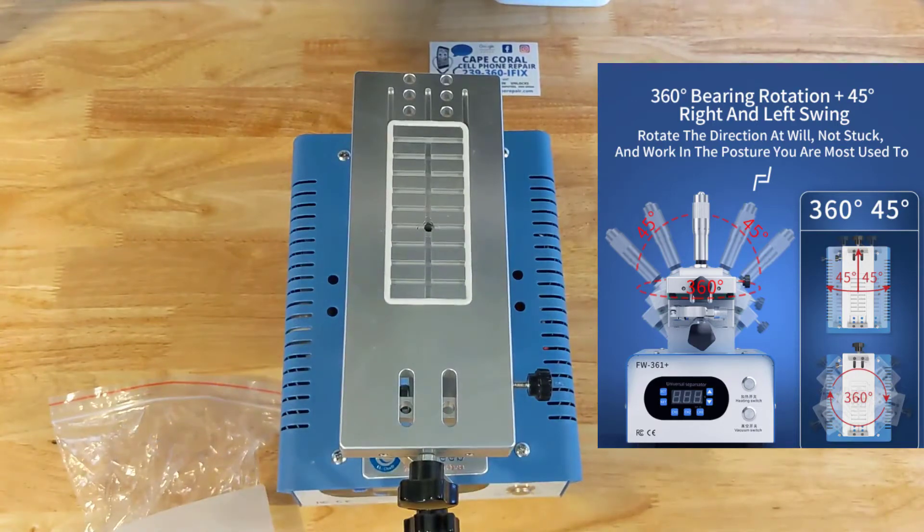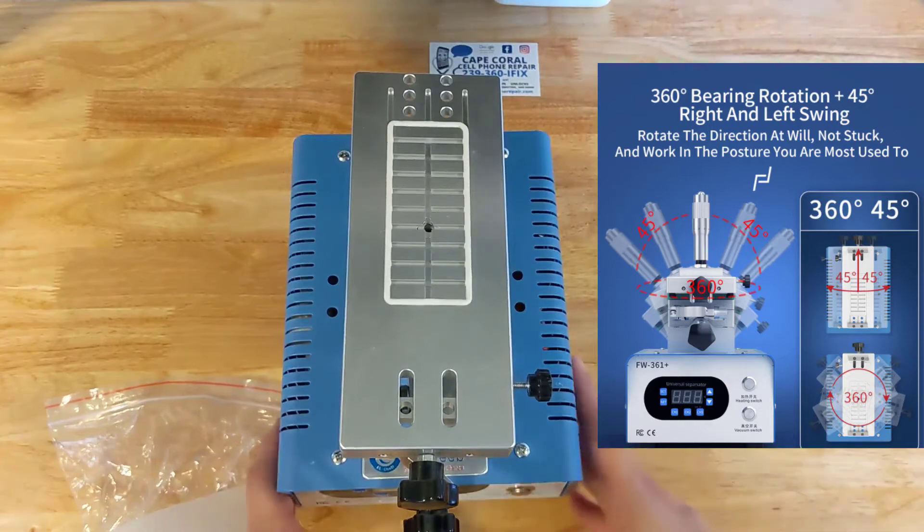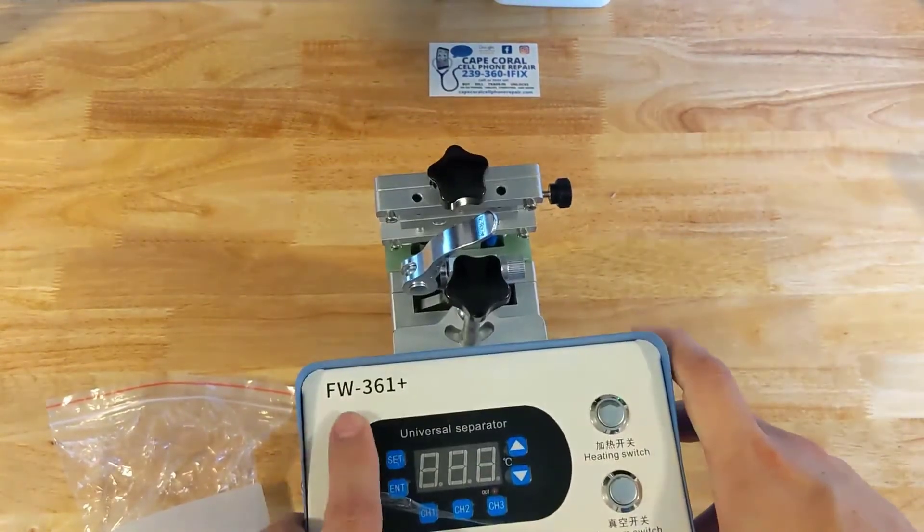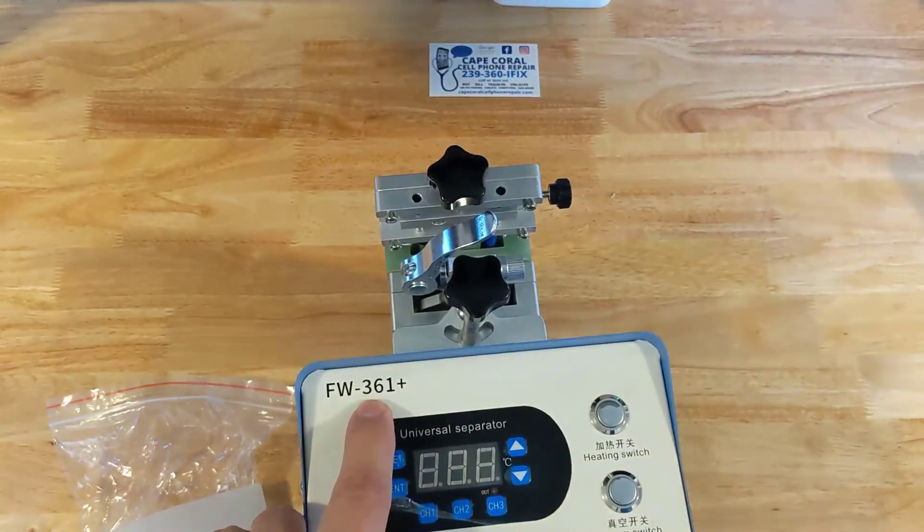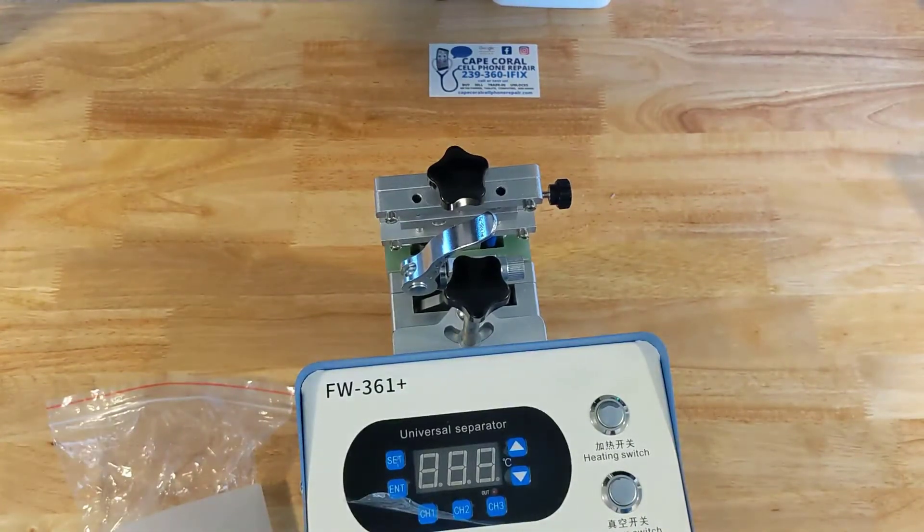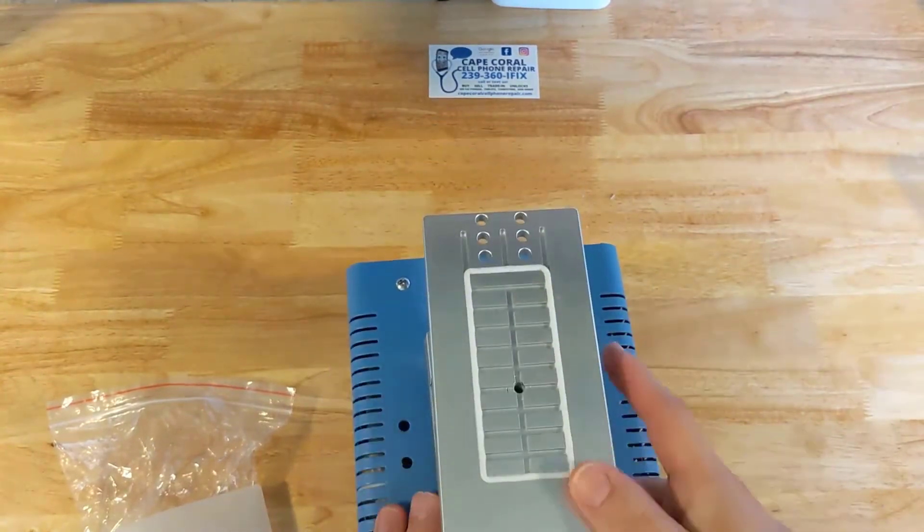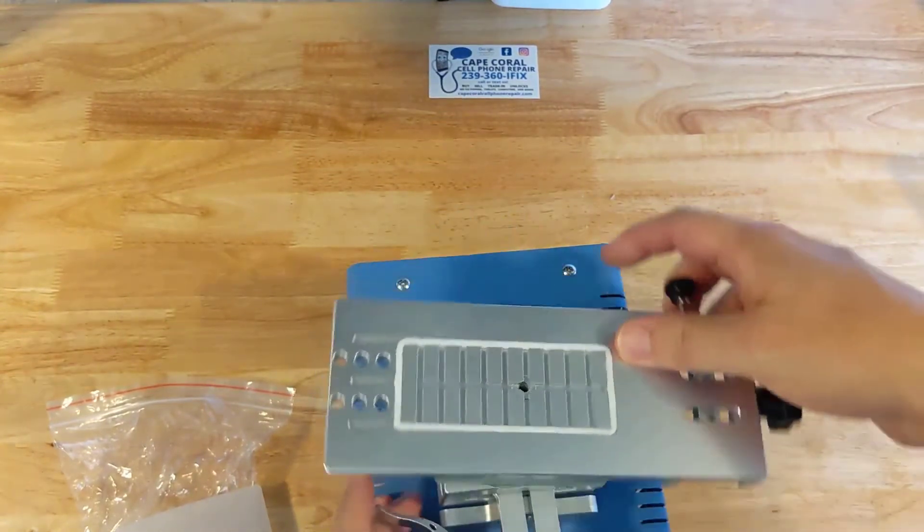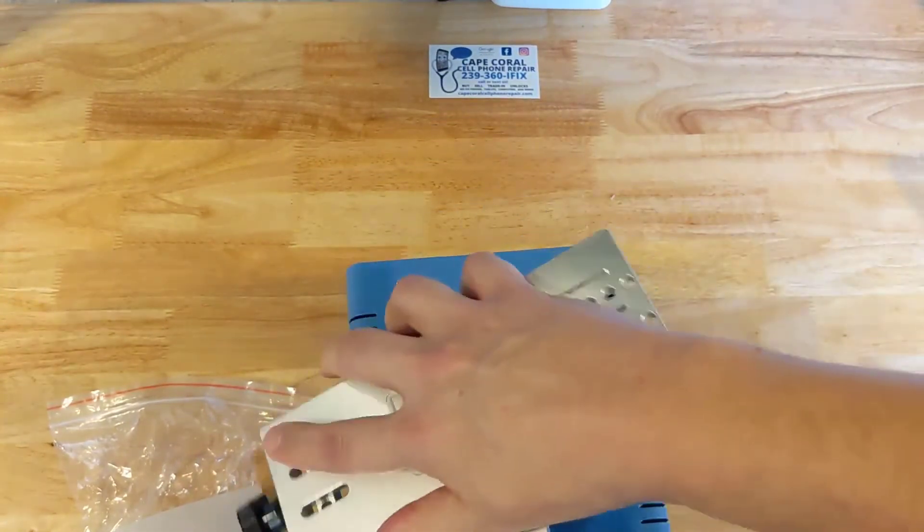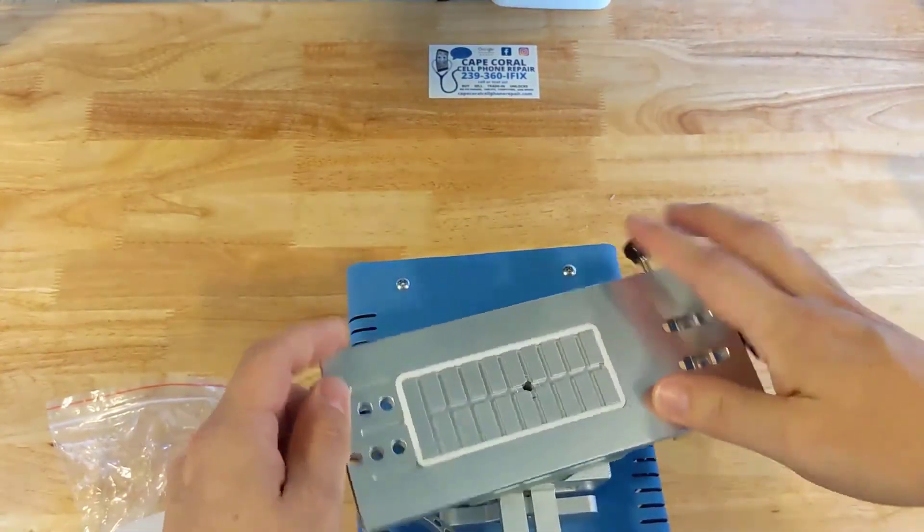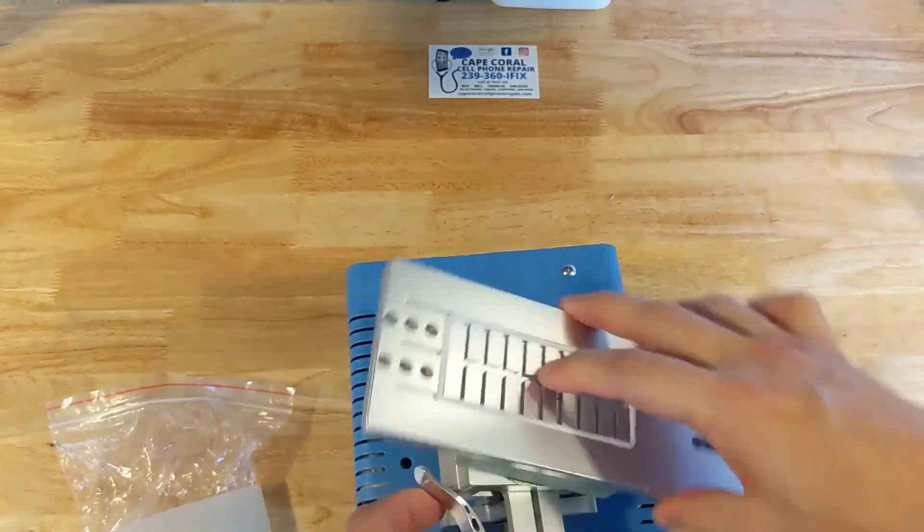Again, this is the Forward FW361 Plus. You see that right there. So this is a brand new machine. They've already done some improvements. You have the 360 degree rotation, just like you can see there. All the way, 360 degrees.